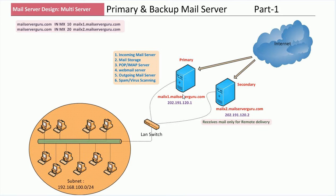Once the primary server is back, the backup server delivers all queued email to the primary one. Local users will always send and receive mail from the primary mail server — the backup server just holds email when the primary server is unavailable. So this is the concept of primary and backup mail server. Let's see another design.